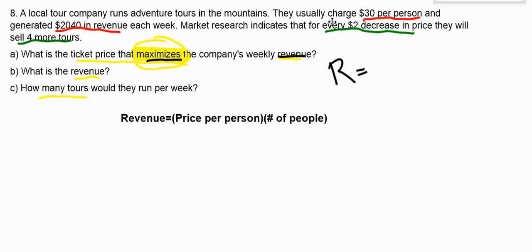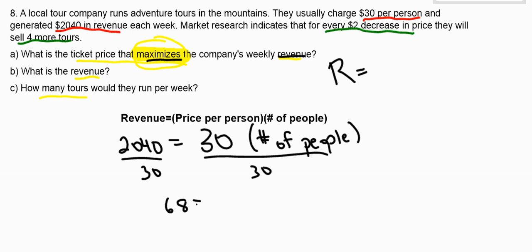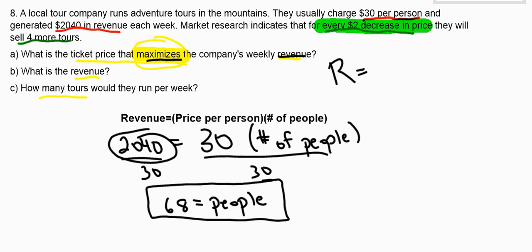So in the original situation, before we worry about any price increases or decreases, we know that we're charging $30 per person and we know that the revenue is $2040. What we don't know originally is the number of people. So let's do that calculation because we're going to need it. So if it's $30 per person and in total we make $2040, I'm going to divide both sides by 30. And that tells me that 68 people are buying tickets when it's $30 per ticket. So right now, before we do any price changes, we have 68 people a week buying $30 tickets and together that gives us a revenue of $2040. So that's the original situation.